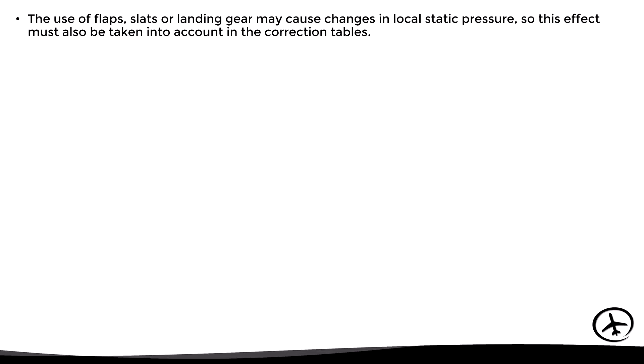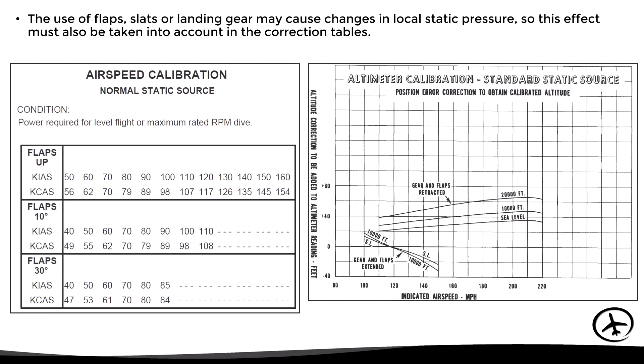Apart from this effect, the use of flaps, slats, landing gear, or other parts of the plane can also cause changes in the local static pressure. This effect must also be taken into account in the correction tables — in this case there is a correction table for the airspeed indicator and another for the altimeter.